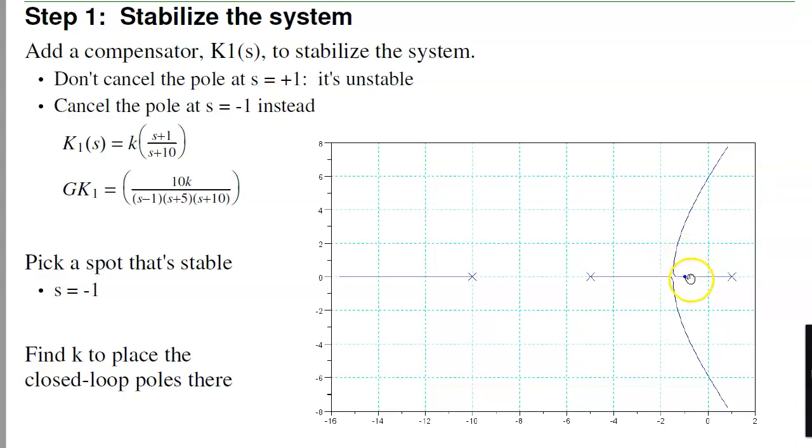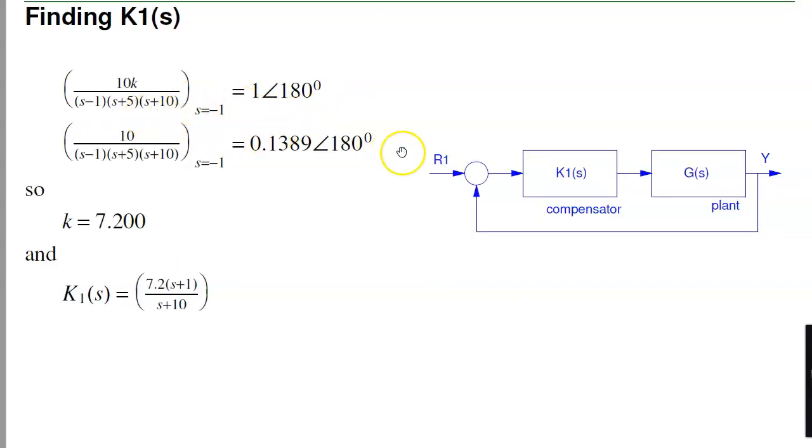So, that'd be the first step. Pick a compensator that pulls the root locus left, so that somewhere the system's stable. And here's one candidate. Cancel the pole at minus 1, move it out to minus 10. Now pick a spot over here. Somewhat arbitrarily, I'll just pick minus 1, because that's a nice number. I'll pick K to put the closed loop dominant pole at minus 1. Then the compensator that does that, here's your plant, G times K. I want to force this to be 1, or at S equals minus 1, to be minus 1. That puts this point on the root locus. Actually places the closed loop poles at minus 1.